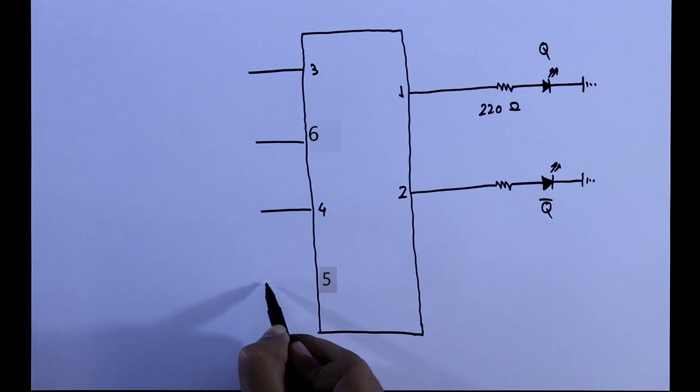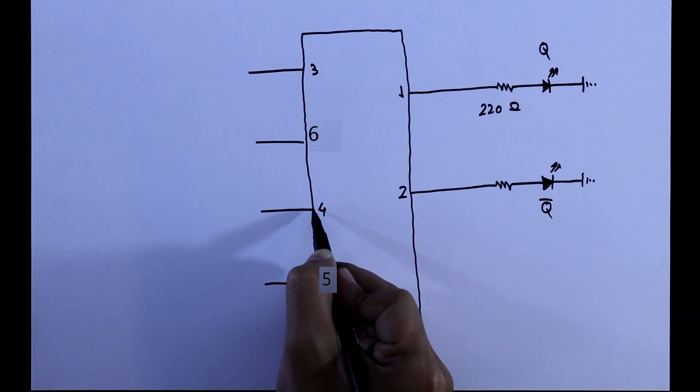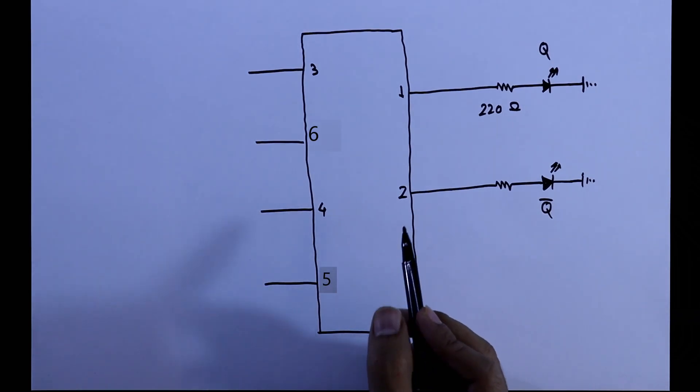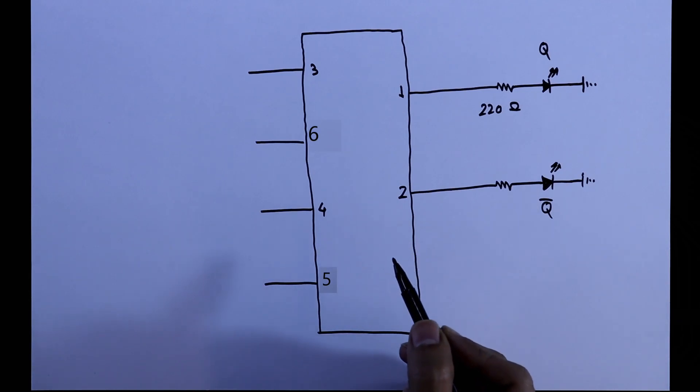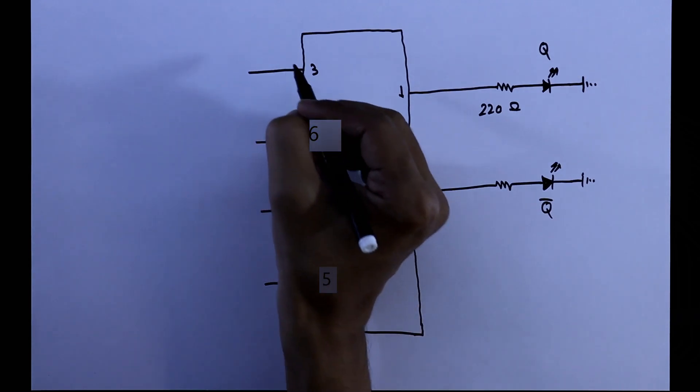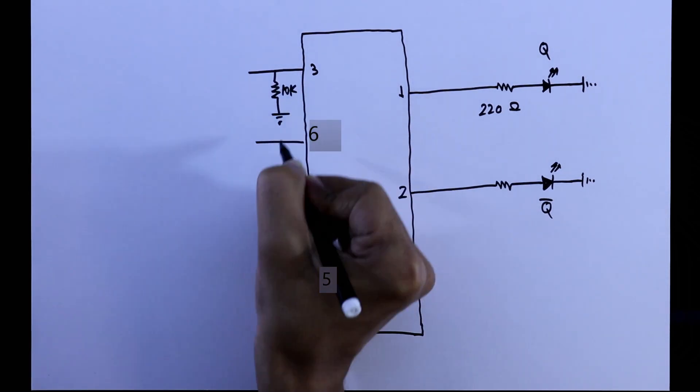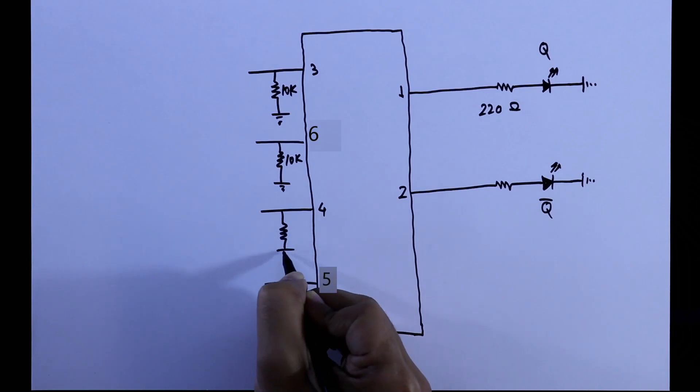With all of these inputs, we have to connect pull down resistor. I already uploaded a video on this, link in the description below. It is very important to know why should we connect pull down resistor with input. So I am connecting pull down resistor with it, and the value is 10 kilo ohms.